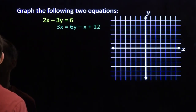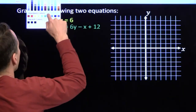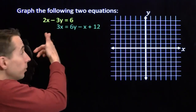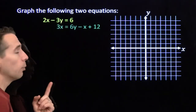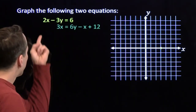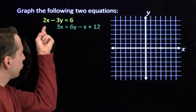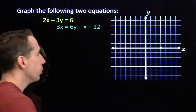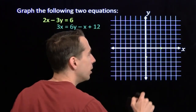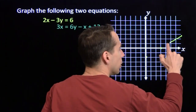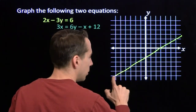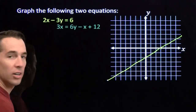Let's take a look at another system. I'm going to grab the yellow pen to graph the yellow equation first. If I put in x equals 3, we get y equals 0 — so that point is on the graph. And if x equals 0, then y has to be negative 2. So the point (0, negative 2) is on the graph, and we have this line right here. That takes care of the yellow line.